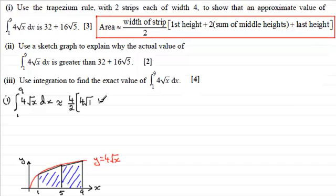Then it's plus twice the middle heights, the sum of the middle heights. Well there's only one middle height here, so to work that out we need to substitute x equals 5 into here and so you'd have y equaling 4√5. So we've got 4√5.